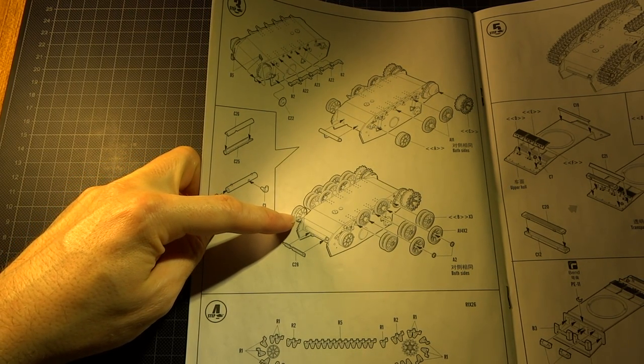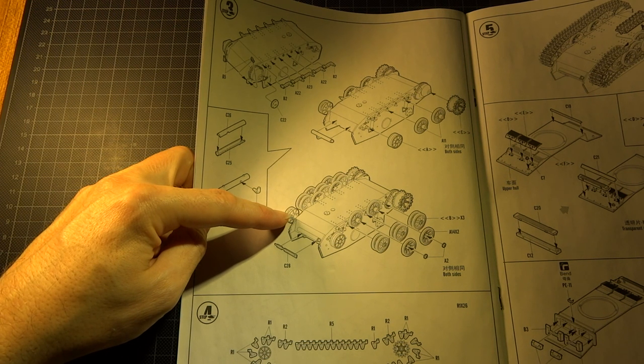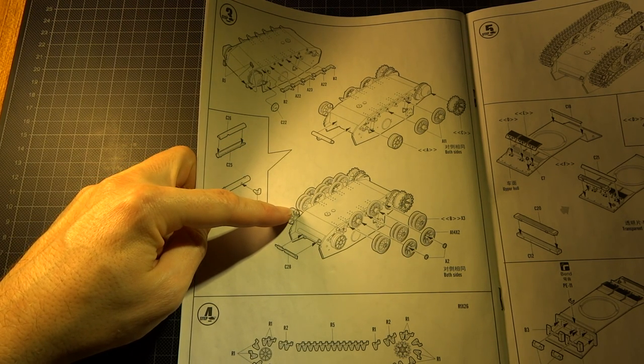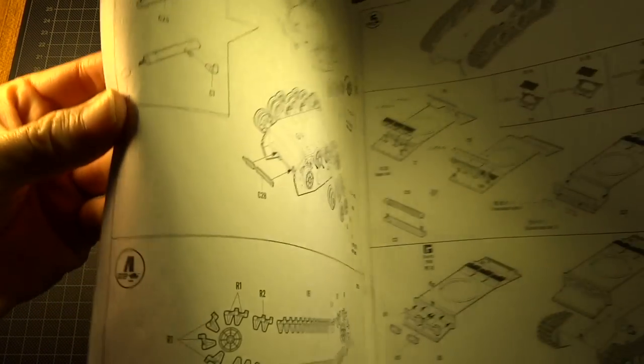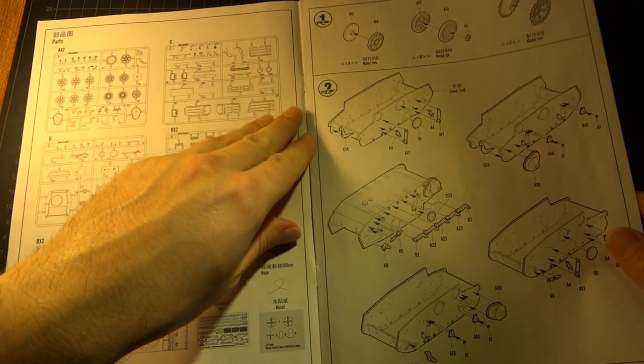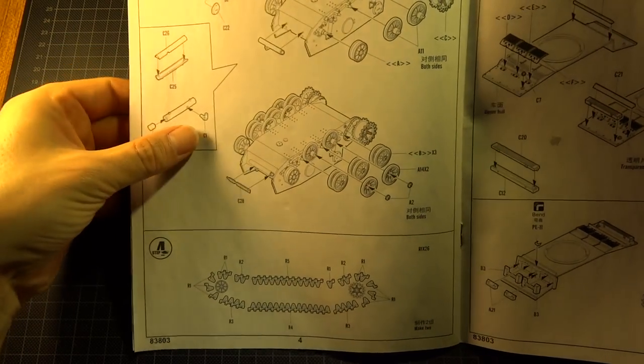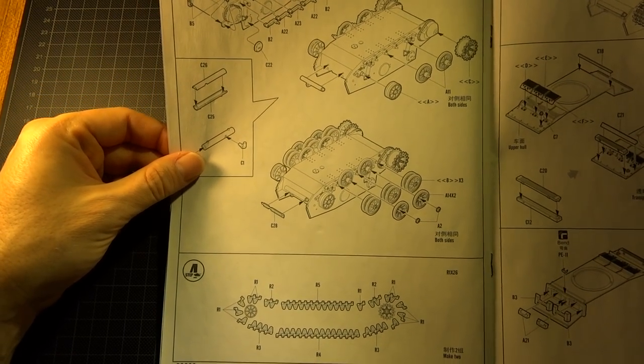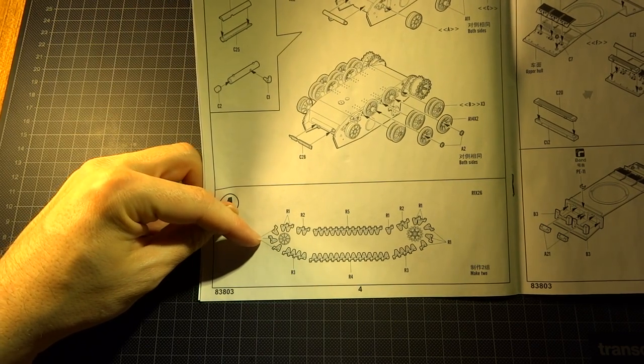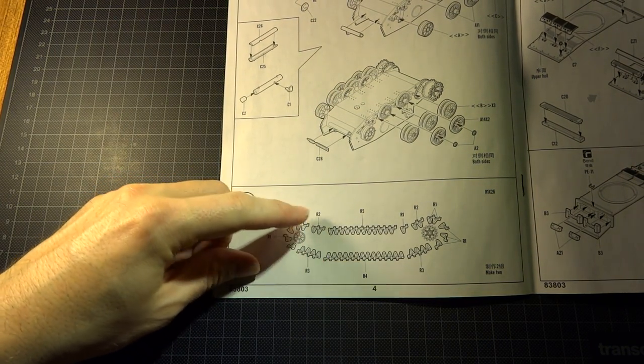This particular Panzer II has overlapping tires which are similar to Panther or Tiger. You'll have to make many tires - six for one side. The tracks are link-by-link tracks. There are two long parts and two shorter ones, plus turning parts. It seems good.